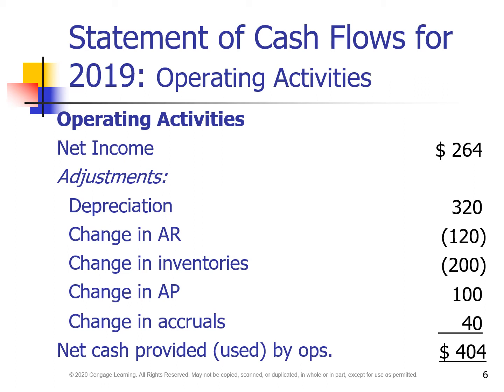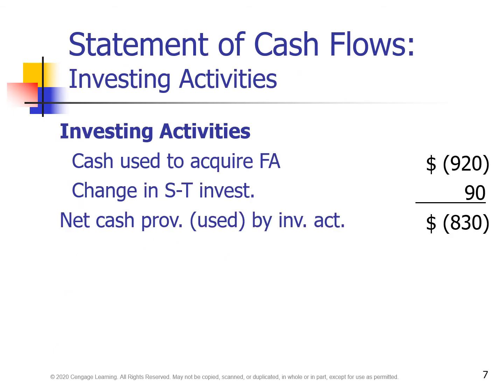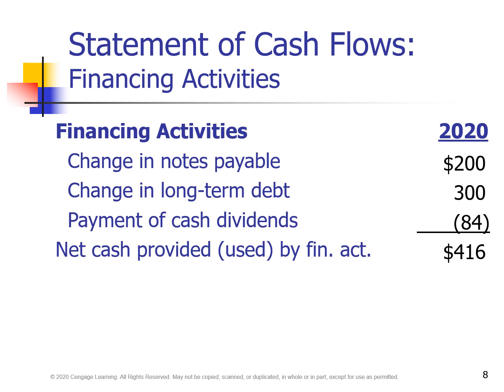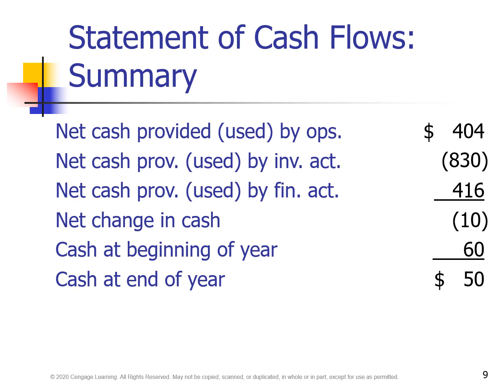The statement of cash flows includes operating activities, investing activities, and financing activities. We can sum all three different activities and add to the cash at the beginning of the year to get the cash at the end of the year.